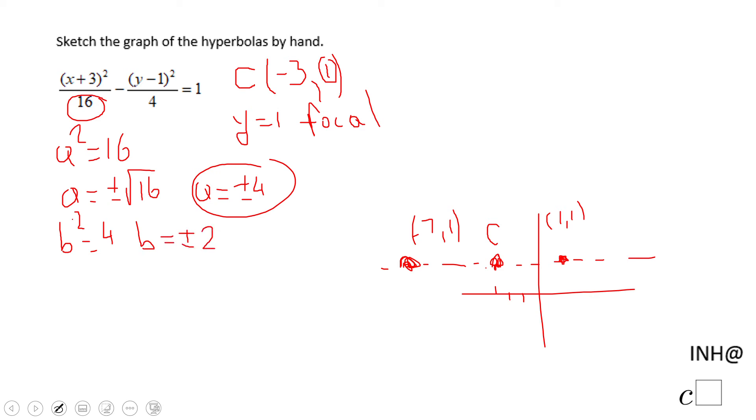And now we can write the equation of the asymptotes, which are y minus k, y minus 1, equals plus or minus b over a, 2 over 4, x minus h, x plus 3. You need to sketch these two lines.